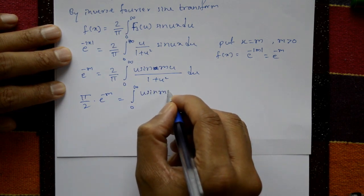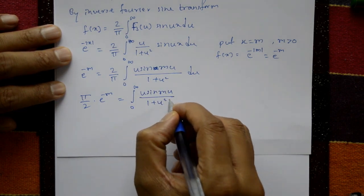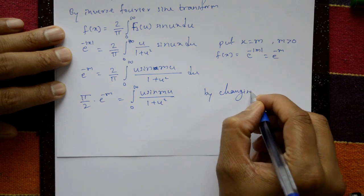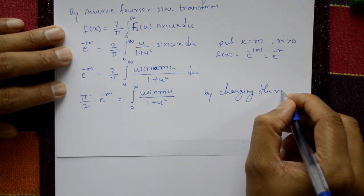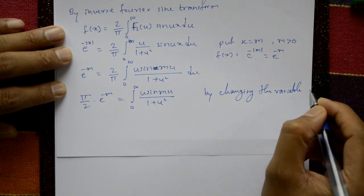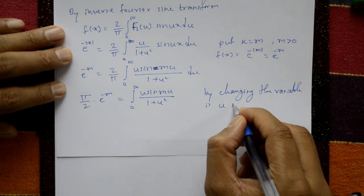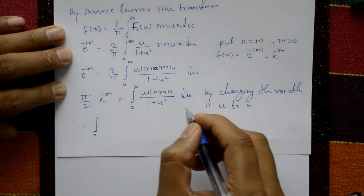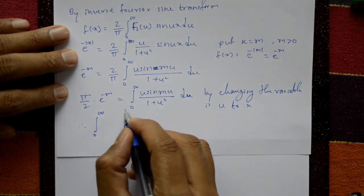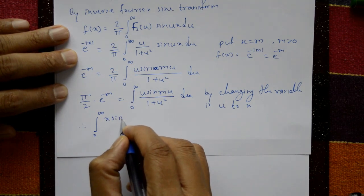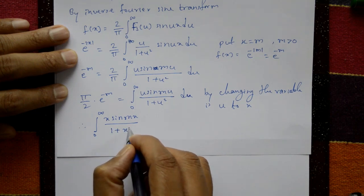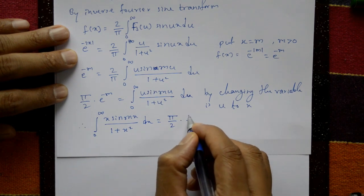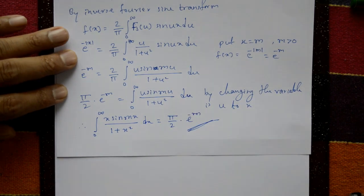Finally, by changing the variable u to x, we get: ∫₀^∞ x·sin(mx)/(1+x²) dx = (π/2)·e^(-m). This is the required solution.